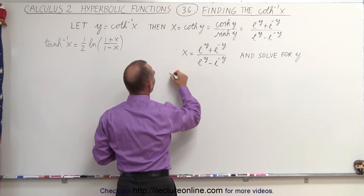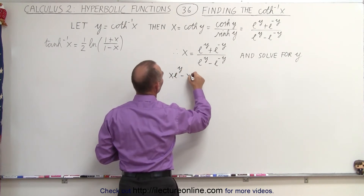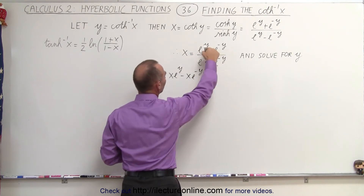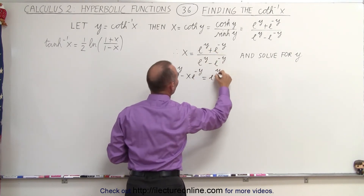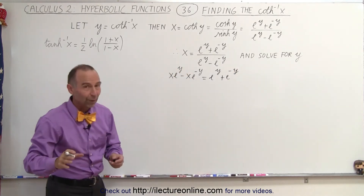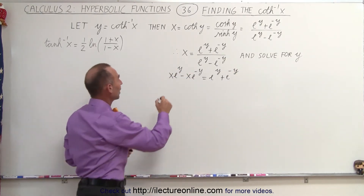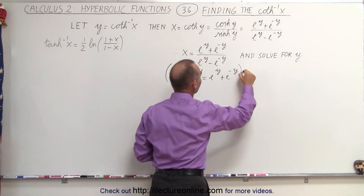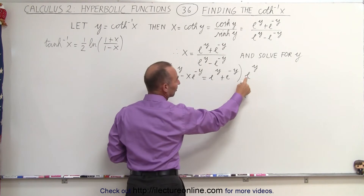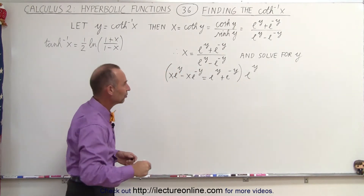So we end up with x e to the y minus x e to the minus y. We multiply this times this and set it equal to the numerator, which is e to the y plus e to the minus y. And if you've watched some of the other videos, you know the strategy here is to multiply the whole thing by e to the y power, because when we multiply this times e to the minus y, this becomes equal to 1, simplifying the equation.